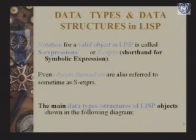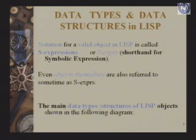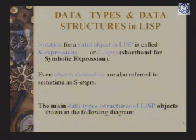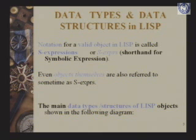The data types and data structures. First of all, we should know that any object — that is, any expression which is recognized in the language LISP as legal — is called an S-expression, which is a shorthand for symbolic expression. Sometimes the objects themselves are referred to as S-expression, but every time we are actually using the notation to express objects. The main data types and structures of LISP objects are shown in the diagram.